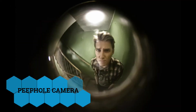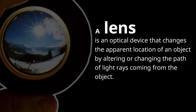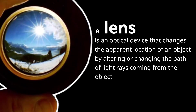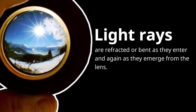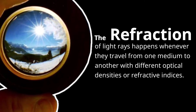In this video, let us take a closer look at what lenses are and how they form images. A lens is an optical device that changes the apparent location of an object by altering or changing the path of light rays coming from the object. Light rays are refracted or bent as they enter and again as they emerge from the lens.